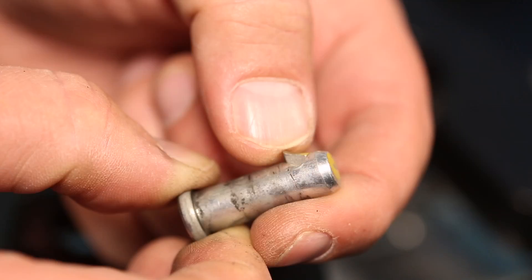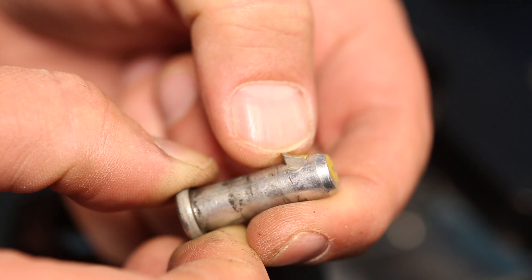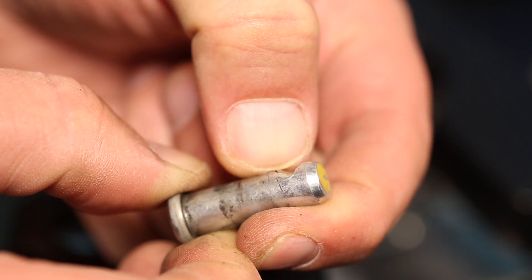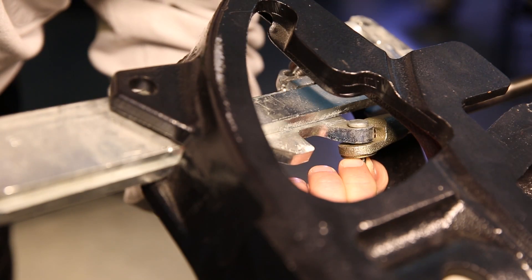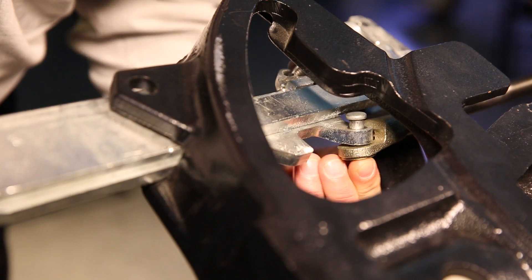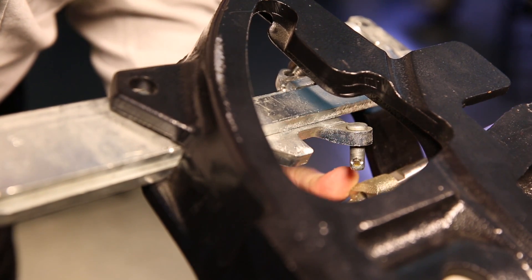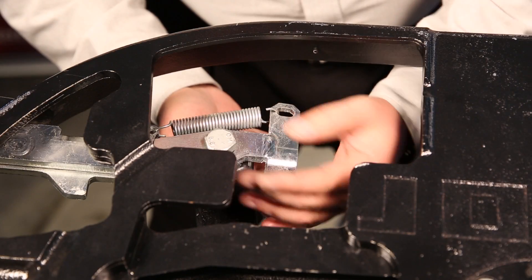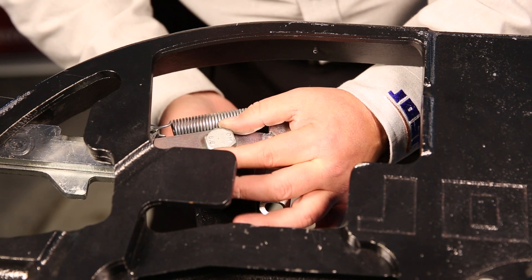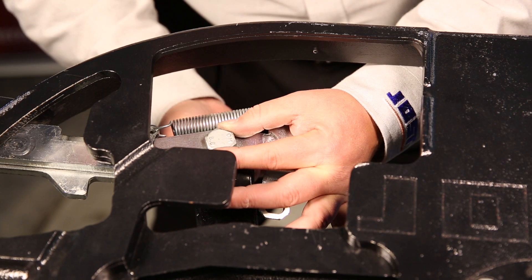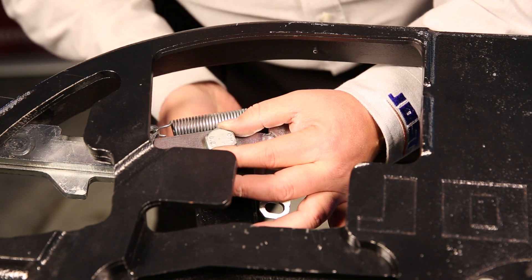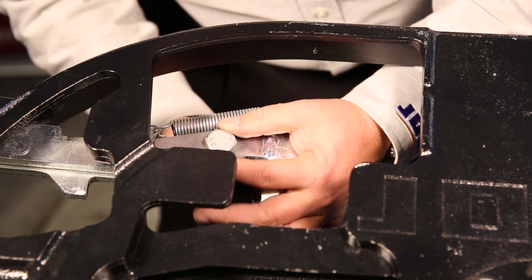There is a quick release wedge pin on the release handle end of the air cylinder. What you want to do is push the wedge in and feed that pin up and through. As you can see by this cutaway model, there is a bolt, castle nut, and a cotter pin that is used to attach it to the release arm.